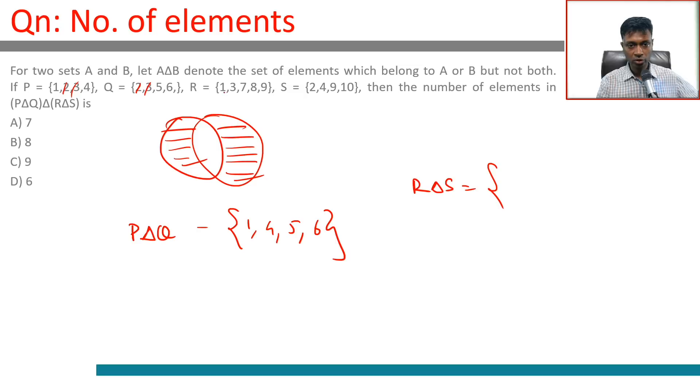R and S: this has 1, 3, 7, 8, 9. This has 2, 4, 10, all even numbers. Only one number here is 8, so not present here. So R triangle S will have 1, 3, 7, 8. They are sitting there: 2, 4, 10. So 1, 2, 3, 4, 7, 8, 10.